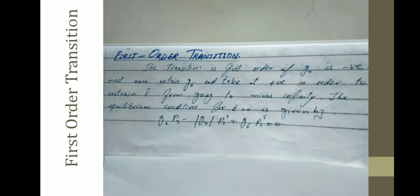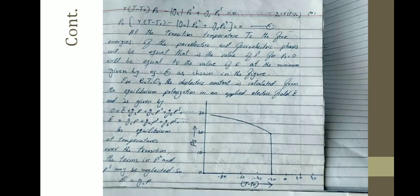For the first order transition: the transition is first order if G₄ is negative. We must now retain G₆ and take it positive in order to prevent F from going to minus infinity. The equilibrium condition for E = 0 is: G₂Pₛ - |G₄|Pₛ³ + G₆Pₛ⁵ = 0, which gives γ(T - T₀)Pₛ - G₄Pₛ³ + G₆Pₛ⁵ = 0.